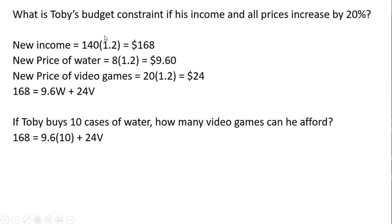Moving on — a slight change. What is Toby's budget constraint if his income and all prices increase by 20%? His new income is going to be 20% higher: 140 times 1.2, so his new income is $168. The price of water, increasing by 20%, will now be $9.60. And the price of video games, also increasing by 20%, will be $24. His new budget constraint, therefore, will look like this.